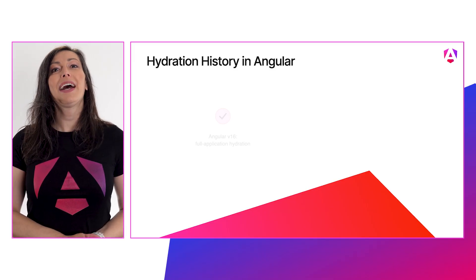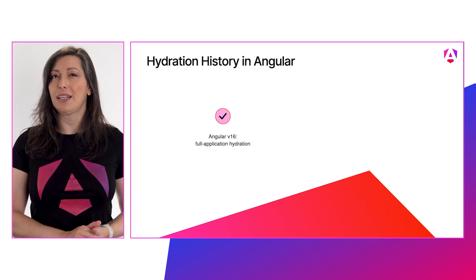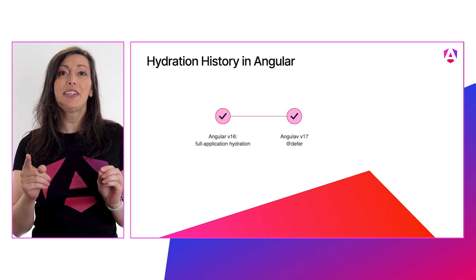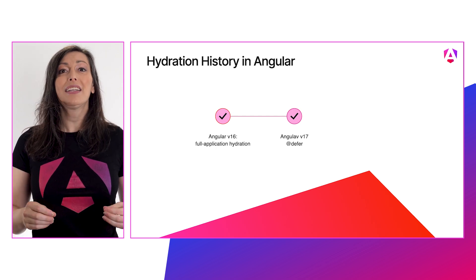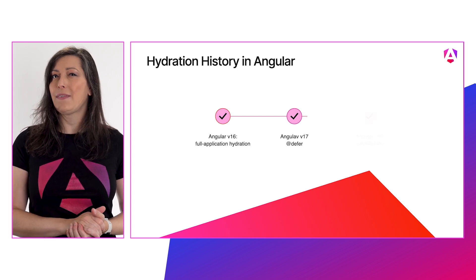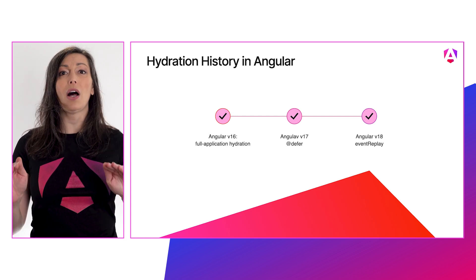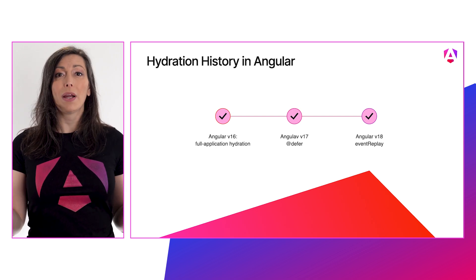You can tell by the plant. Oh, we got rid of that anyway. So back in v16 we added support for full application hydration — this ensures your server-side rendered HTML is reused when your application bootstraps on the client side. Then in v17 we added deferrable views, also known as defer blocks — Angular's native primitive for declaratively deferring loading chunks of your application. And then in v18 we added event replay, which ensures none of your users' interactions are lost before hydration finishes.